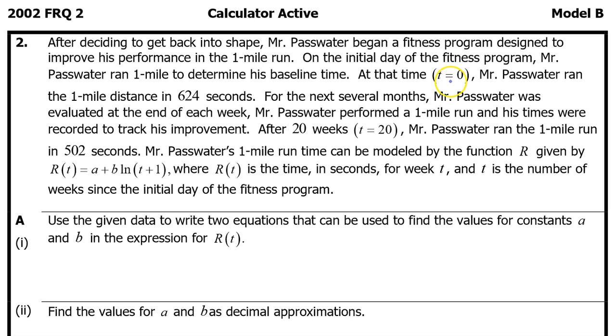At that time, t equals zero, Mr. Passwater ran the one-mile distance in 624 seconds.